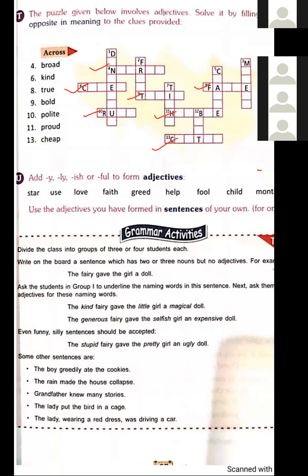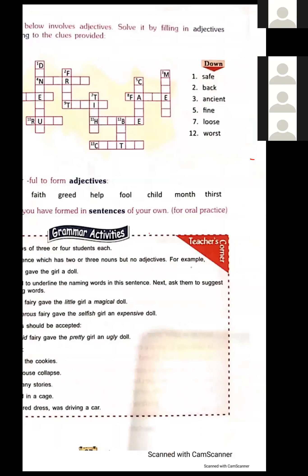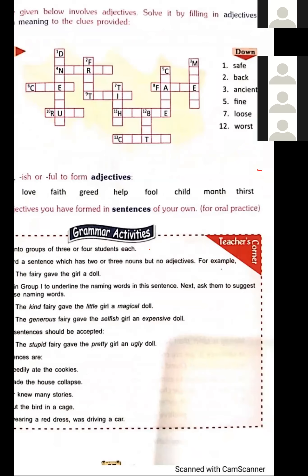Now downwards: 1st — safe, opposite is dangerous (D-A-N-G-E-R-O-U-S); 2nd — back, opposite is front; 3rd — ancient, opposite is modern (M-O-D-E-R-N); 5th — fine, opposite is coarse; 7th — loose, opposite is tight (T-I-G-H-T); 12th — worst, opposite is best.